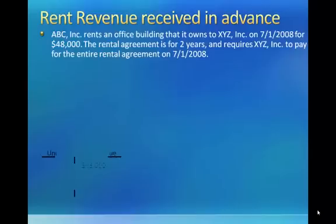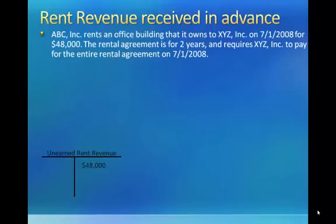Consider the following example. If ABC rents an office building to XYZ on July 1, 2008 for $48,000 and the rental agreement is for two years, and XYZ pays the entire $48,000 on July 1, 2008 — because none of the rental term has passed at the time the $48,000 is received — ABC is required to record the entire amount in a liability account called unearned rent revenue. This account represents revenue that they will earn at some point, but if they receive the money up front, they still haven't earned it yet, so they're not able to book it as revenue until they've actually earned it.